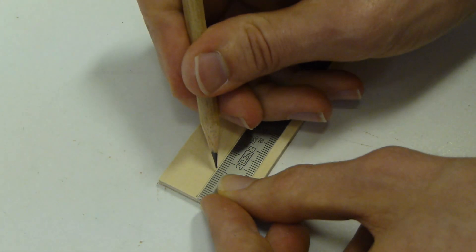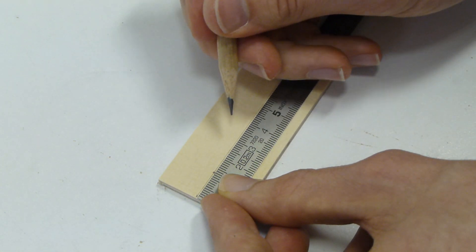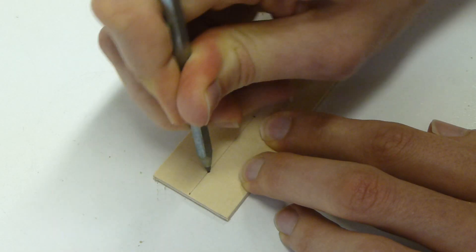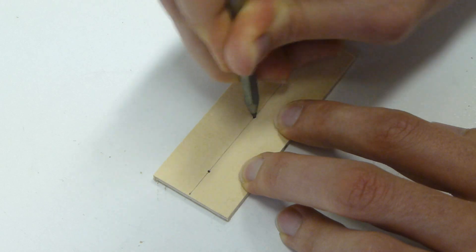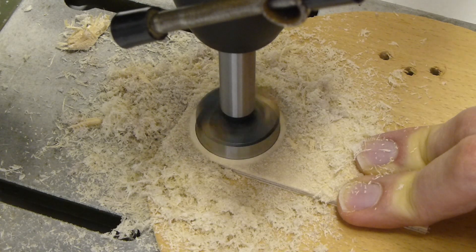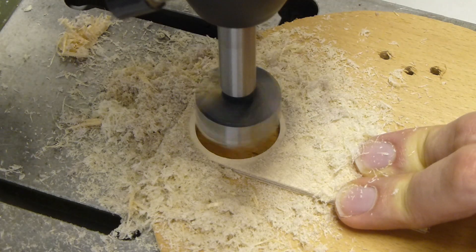Die Positionen der Löcher werden durch Messen auf die Teile übertragen. Damit der Bohrer nicht verläuft, die Löcher vorher mit einer Reißnadel ankörnen. Das Loch im Deckel kann gebohrt oder ausgesägt werden.